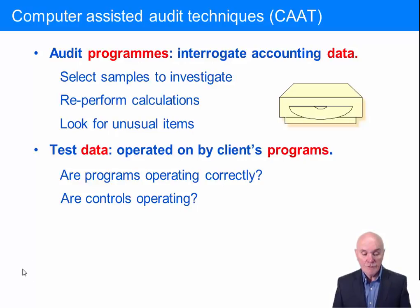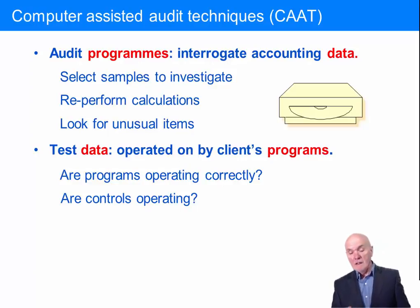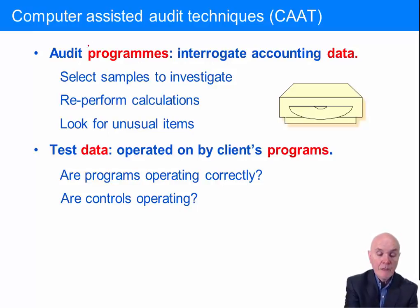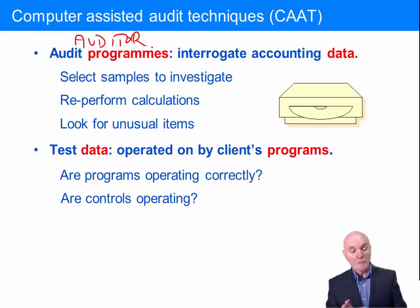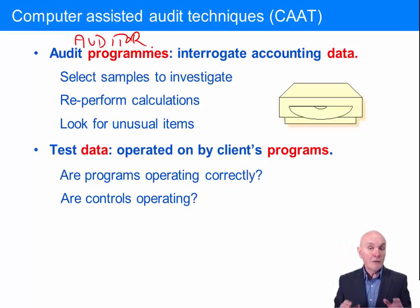There are two main types of computer-assisted audit techniques. The first is the use of what's called an audit programme, and an audit programme is something which is owned by the auditor. Firms of auditors develop these programmes, and really their purpose is to read the data on clients' computer files.